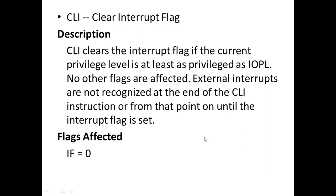CLI (clear interrupt flag) clears the interrupt flag if the current privilege level is at least as privileged as the IOPL. CLI clears the interrupt when the privilege level equals the IOPL. External interrupts are not recognized at the end of the CLI instruction because from that point on, interrupts remain disabled until the interrupt flag is set again.